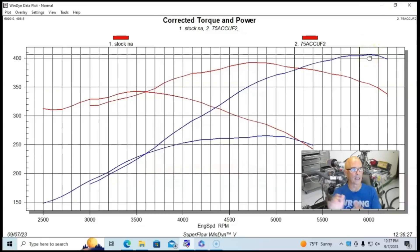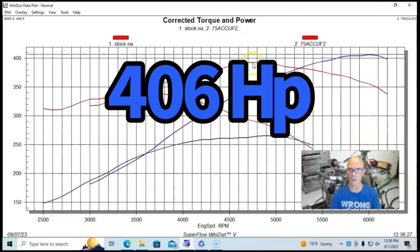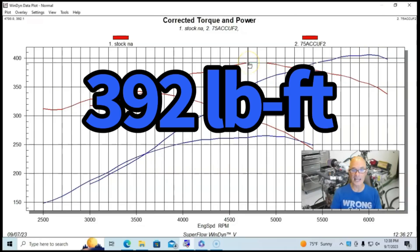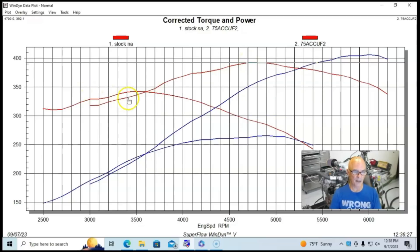And when we ran this thing with an optimized tune, this was all run on 91 octane, 405 or 406 horsepower, and 392 foot pounds of torque. So you could see down here below 3,600, we lost maybe a little bit of torque, not enough that I would worry about it because we got gains everywhere else. But this thing would pull really hard, obviously from 3,500 all the way out past 6,000 RPM.